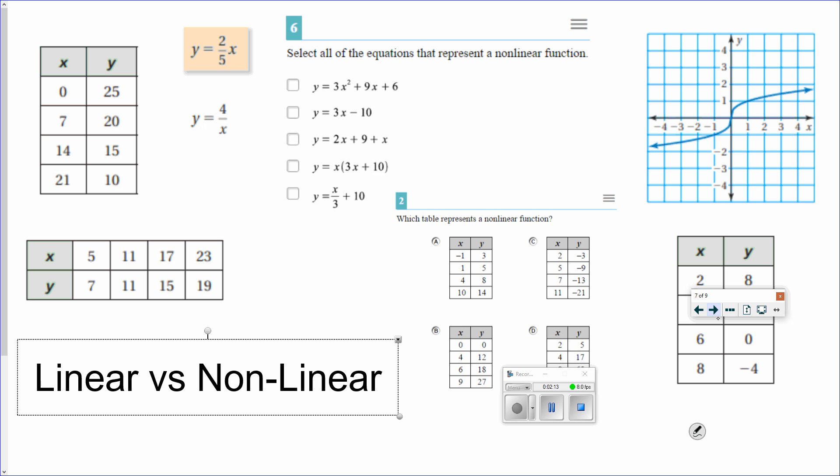Now we're looking at linear versus nonlinear. So don't get these two things confused. Linear means the same rate of change, same path, same everything the entire time. Nonlinear means it's going at a different rate. So I'm going to do one table with you, one graph, one equation, and then you can pause the video and try to figure out the rest.